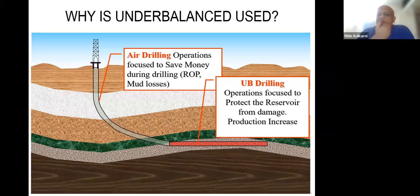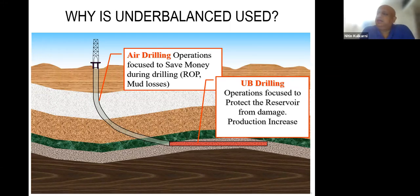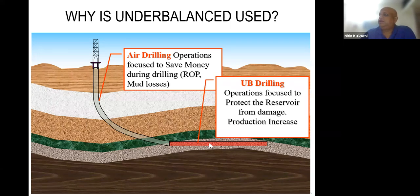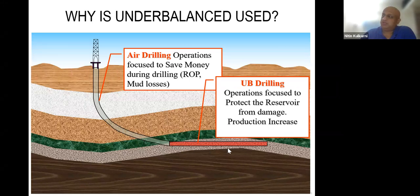Air drilling is generally used in surface and intermediate sections, while underbalanced drilling is used in the reservoir sections. You don't use air drilling in the reservoir because air is a flammable fluid that can cause a fire hazard. In UBD you typically use nitrogen — an inert gas that doesn't react with hydrocarbons to cause combustion. The presence of oxygen is required for any combustion, so this is precisely why air is not used in the reservoir section.